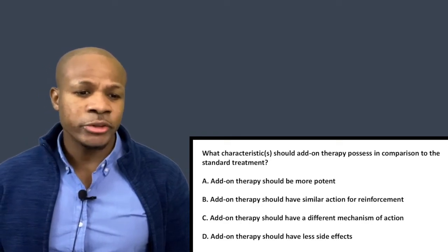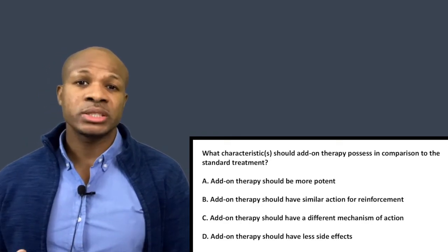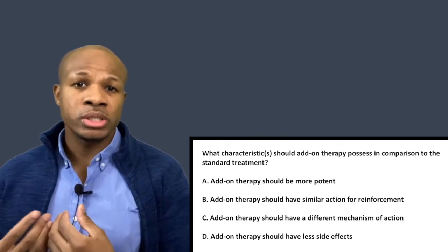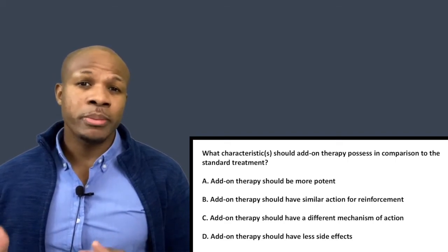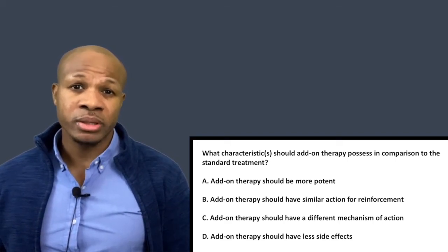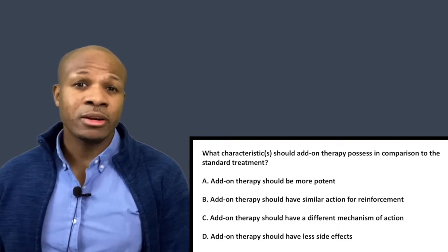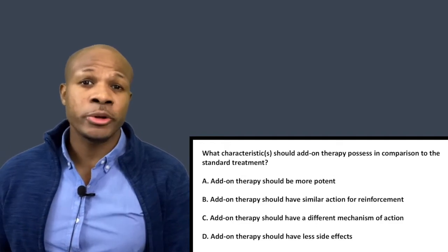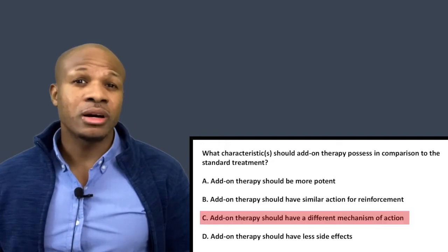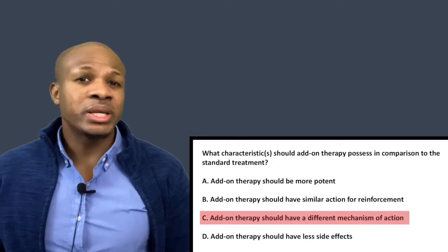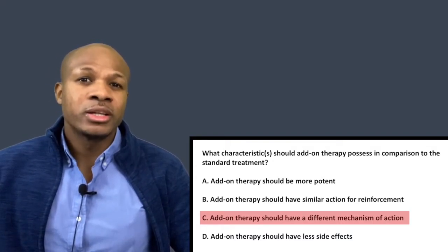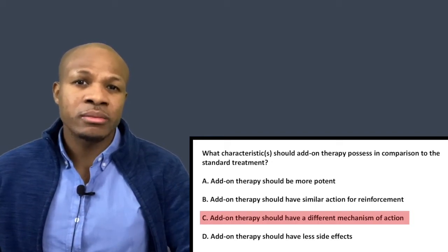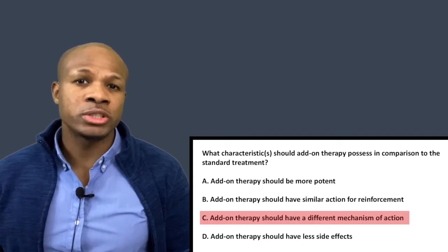Question number two: what characteristics should add-on therapy possess in comparison to standard treatment? When standard treatment is not fully controlling the condition and you implement add-on therapy, you want to make sure the add-on therapy has a different mechanism of action than the standard therapy. If it has the same mechanism of action, you run the risk of overdosing the patient — it's almost like giving the patient more of the same drug they're already taking.